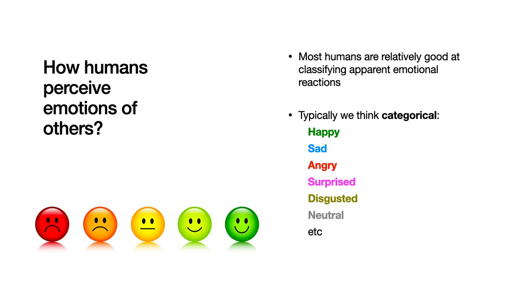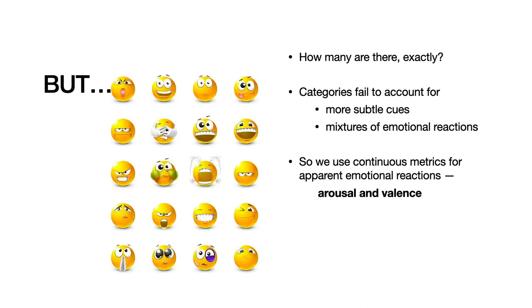Most humans are relatively good at classifying apparent emotional reactions provided the context. However, typically we think categorically — happy, sad, angry, surprised, etc. If emotional reactions are indeed categorical, how many are there exactly? Additionally, categories would fail to account for things such as more subtle emotional reactions or mixtures of these — for example, surprised and happy, or surprised and sad.